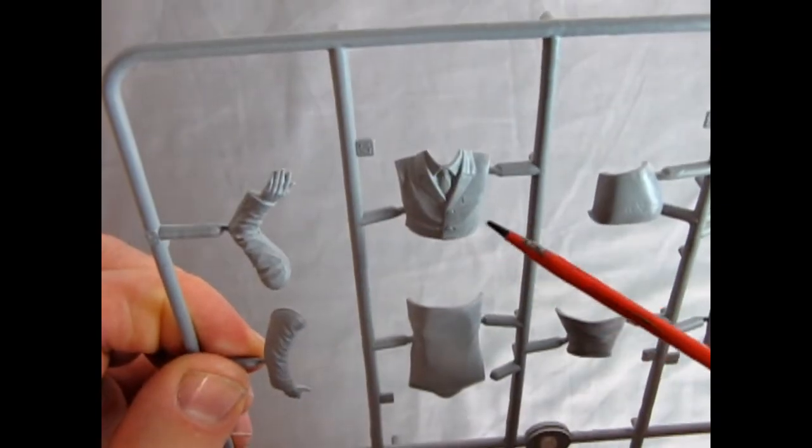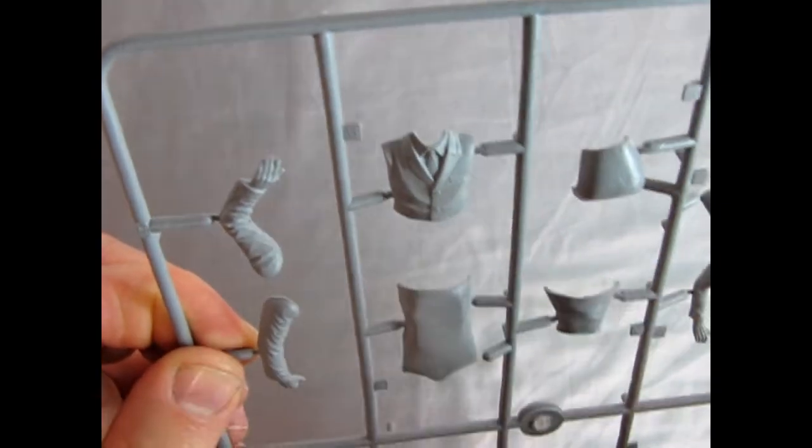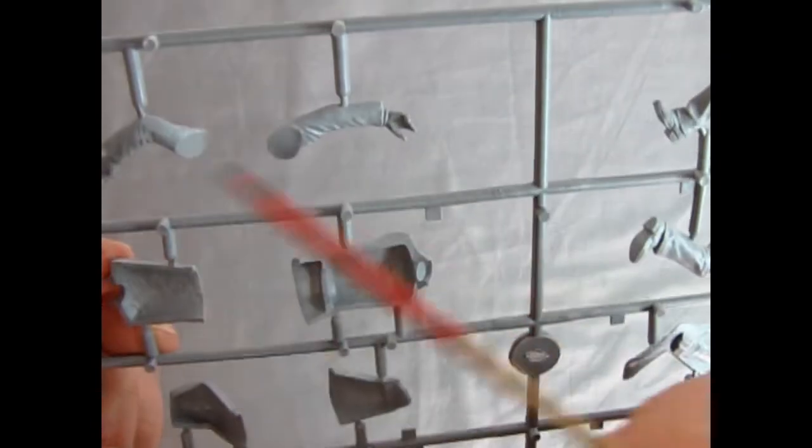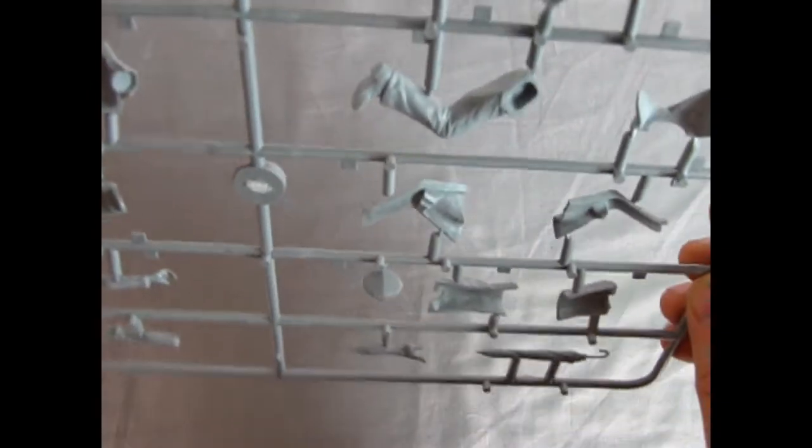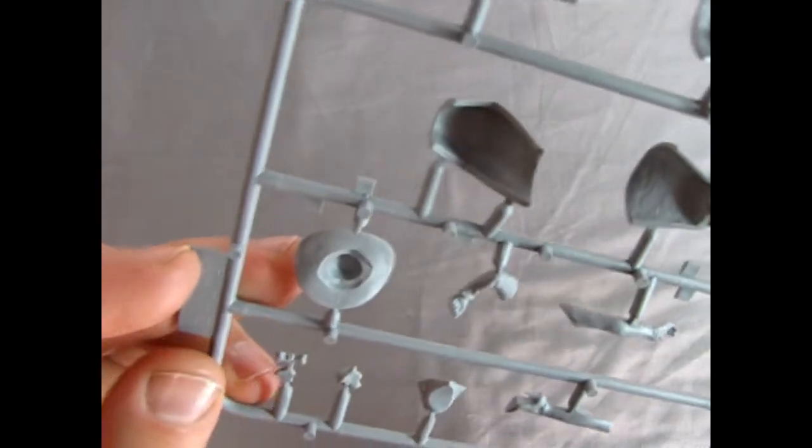Anyway, look at the nice suit jacket with the pocket, the tie and the buttons. Really excellent kit. Turning it over again, you can see the nice detail along the back. No mold marks, but nice to see that the detail for the legs goes all the way around, including the wrinkles in the pants.